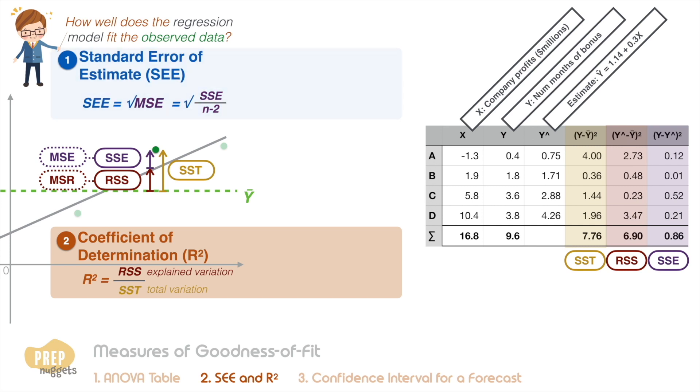To calculate the standard error of estimate, we plug the SSE into the formula. n is the number of observations, which is 4, so we divide the SSE by 2 and square root it, which gives us a standard error of 0.66. This means that one standard deviation of the error is 0.66 months of bonus.